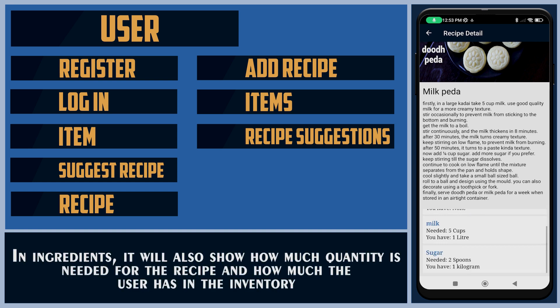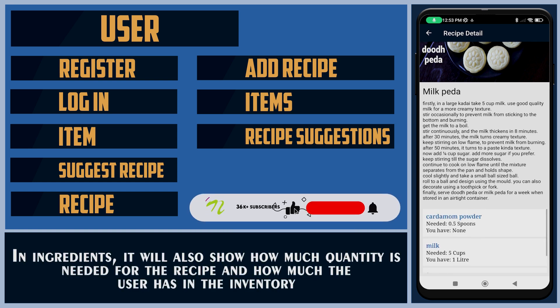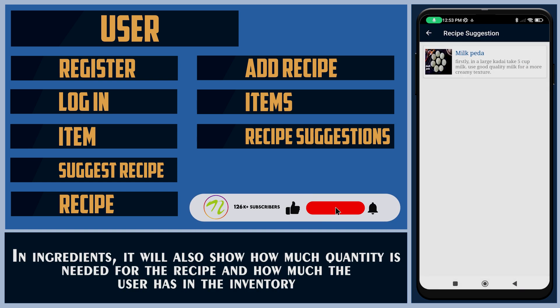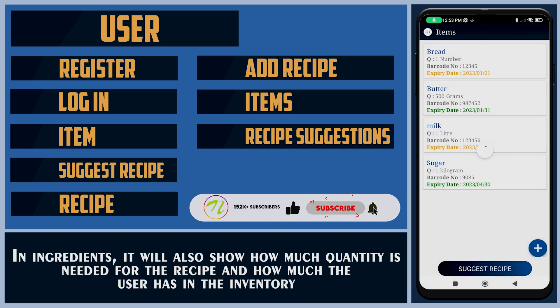In the ingredients section, it will also show how much quantity is needed for the recipe and how much the user currently has in the inventory.